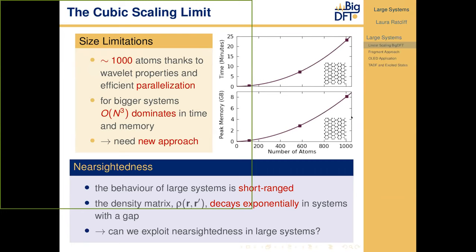As seen in these two figures, we start to hit the cubic scaling limit for both compute time and memory — in this case for a graphene system — and particularly because of memory, more than a thousand atoms becomes very difficult to achieve. So if we want to do much bigger systems, which both myself and William will show examples of, we need a new approach.